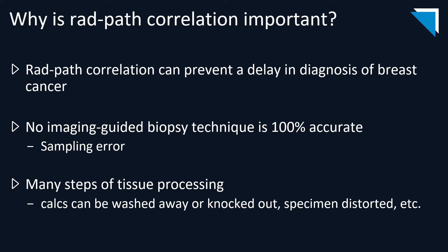Why is rad-path correlation important? Rad-path correlation is important because it can prevent a delay in diagnosis of breast cancer, which is really our ultimate goal. There is no imaging-guided biopsy technique that's a hundred percent accurate. There's always a possibility of having some type of sampling error, and also due to the many steps of tissue processing, calcifications can be washed away or knocked out of the specimen when placing the tissue on the slide. Specimen can be distorted, so there are many different factors that can affect the interpretation by the pathologist.